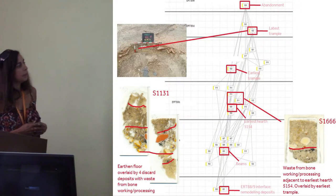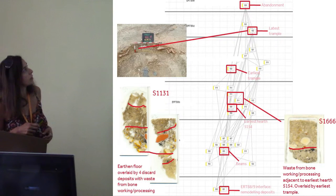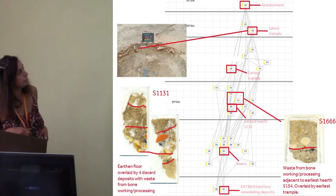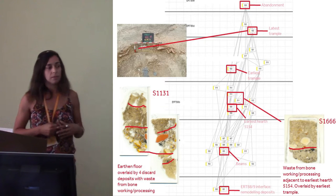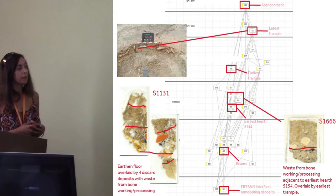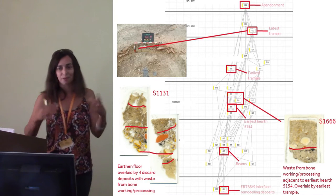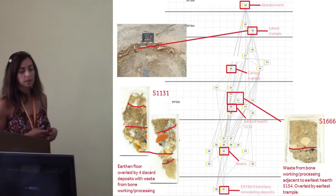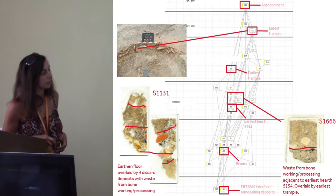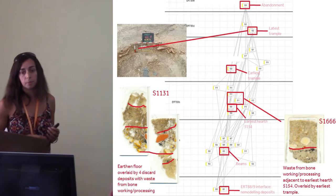In terms of the use of this building, we have various use phases. On top of the floor are loads of discard deposits. This building was very poorly maintained — they didn't really clean it — and this is a theme throughout. It was packed full of refuse, a lot of which was the result of bone working or bone processing, both in the early phases and in the later phases of the building.